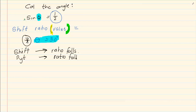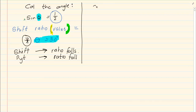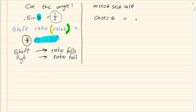Cosec, sec, and cot also disappear. Now what happens when we don't have the basic three — sin, cos, and tan ratios — but instead we have cosec, sec, and cot? For example, if I gave you cosec theta is equal to 2, how do you solve that on your calculator?